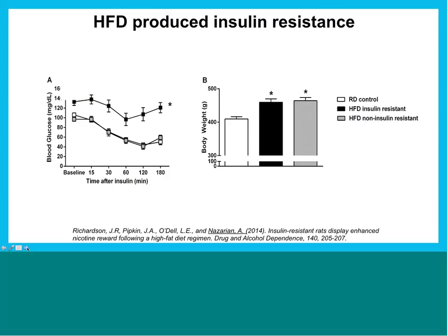We also extended our study to the type 2 model using insulin-resistant animals. Animals given a high-fat diet split into two groups: some became insulin resistant — when given insulin, their blood glucose levels dropped only a little — and some did not develop insulin resistance, responding like normal healthy animals. Importantly, all animals on the high-fat diet gained weight regardless of insulin resistance status, but only some became insulin resistant.